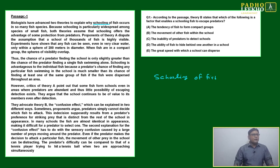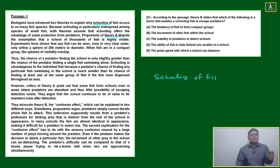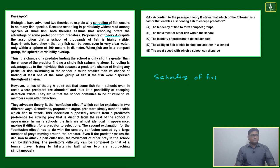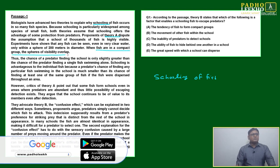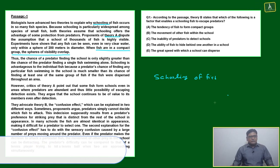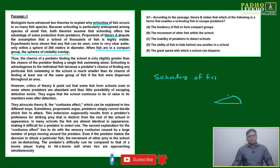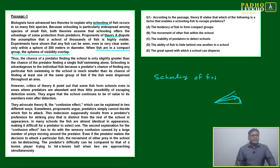Proponents of Theory A dispute the assumption that a school of thousands of fish is highly visible. Experiments have shown that any fish can be seen even in very clear water only within a sphere of 200 meters. When fish are in a compact group, the spheres of visibility overlap. If one fish is here and another fish is here, this overlap will happen.